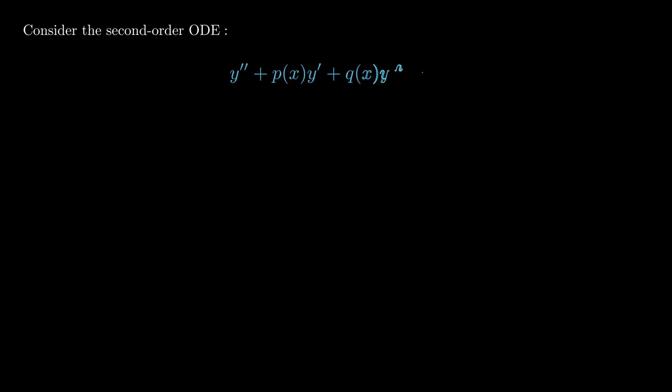Before we do anything fancy, let's first get the following straightforward. We'll consider the second-order ordinary differential equation given by y'' + p(x)y' + q(x)y^m = 0. This ODE is said to be linear if the exponent m is less than or equal to one.